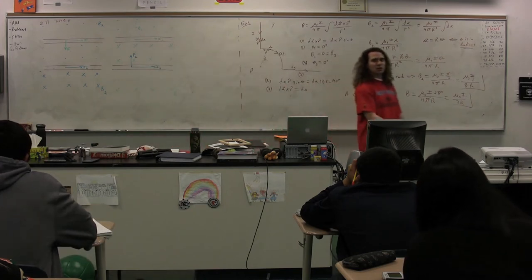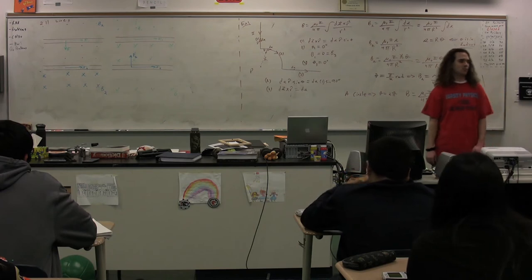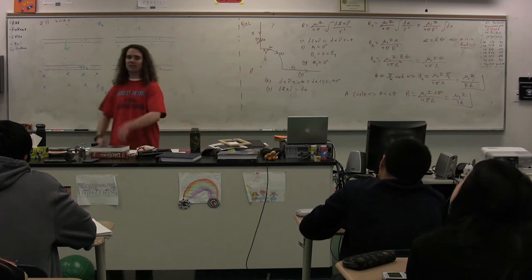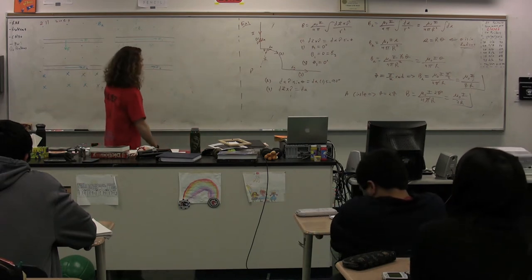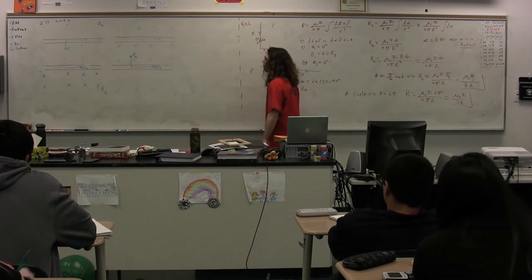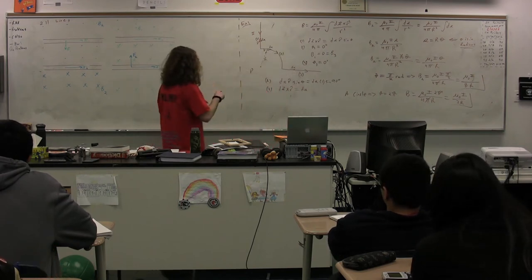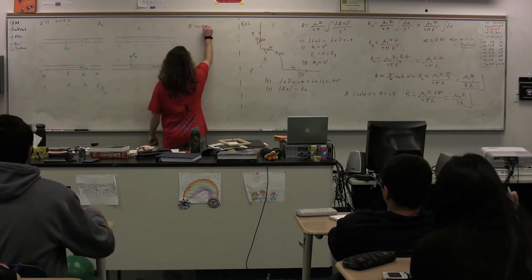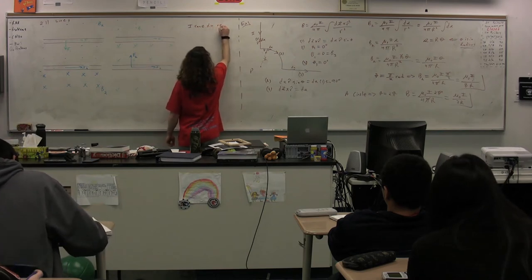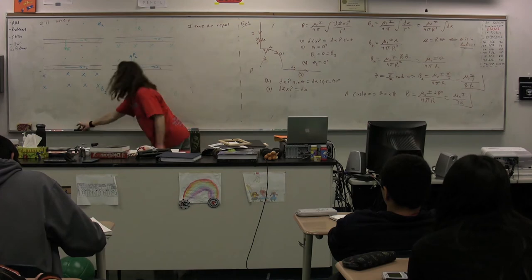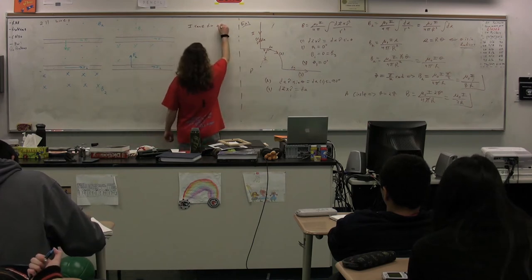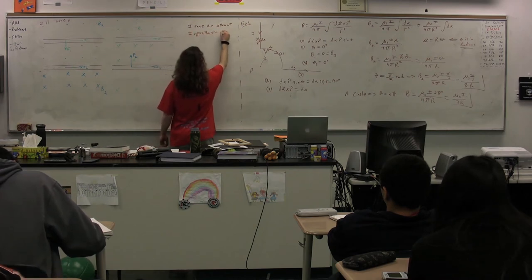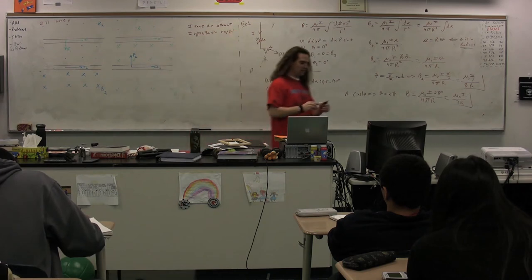In other words, two parallel current-carrying wires are actually attracted to one another if the currents are in the same direction. If the currents are in the opposite direction, they repel. One thing to be aware of — and this is something good to have memorized — is that when the currents are in the same direction, they attract, and if the currents are in opposite directions, they repel. This is unfortunately the reverse of Coulomb's law of charges.